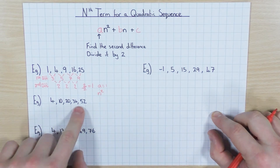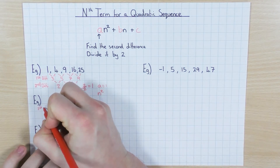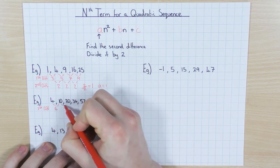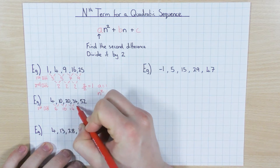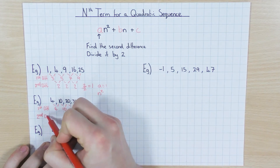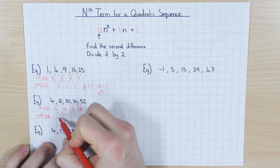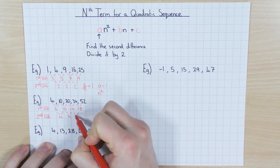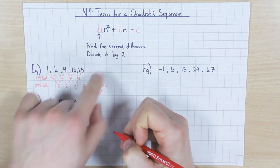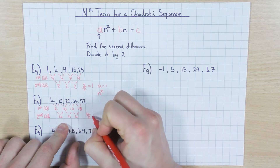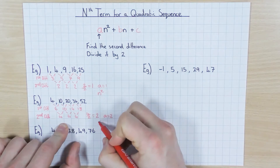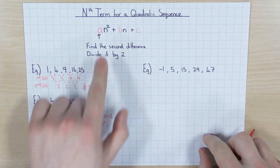Let's find 'a' for this second sequence. Again, the first step is to find the first difference, which gives us 6, 10, 14, and 18. Then the second difference between these is 4, 4, 4 — so again the second difference is the same, confirming it's quadratic. I divide it by 2: 4 divided by 2 is 2, so a equals 2, meaning I would have 2n squared at the start of my nth term.